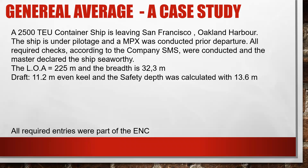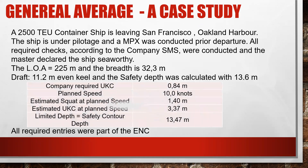A 2,500 TEU container ship is leaving San Francisco — Oakland harbour. The ship is under pilotage and the master-pilot exchange was conducted prior to departure. All required checks according to the company SMS were conducted and the master declared the ship seaworthy. The length overall is 225 meters, the breadth is 32.3 meters, the draft 11.2 meters even keel, and the safety depth was calculated at 13.6 meters. The company required an under-keel clearance safety for this draft of 0.84 meters.